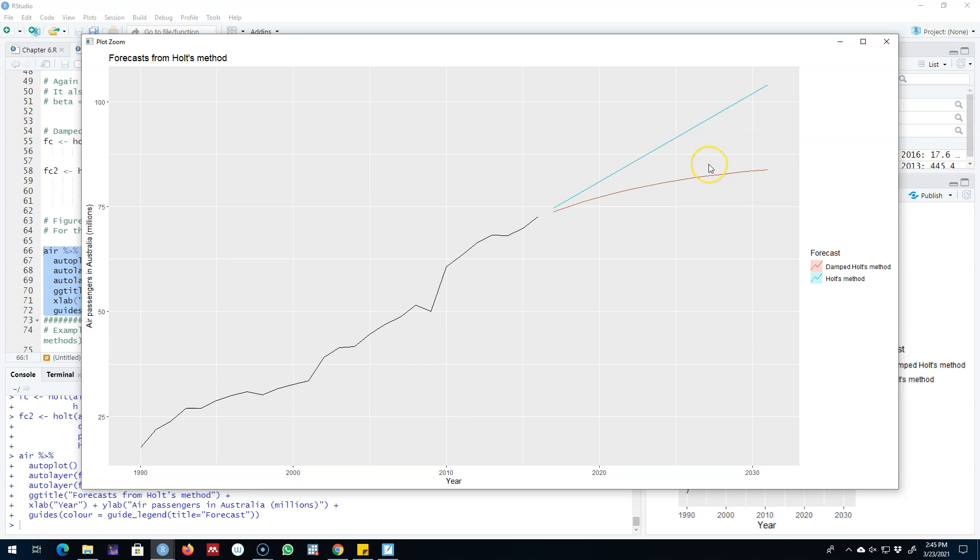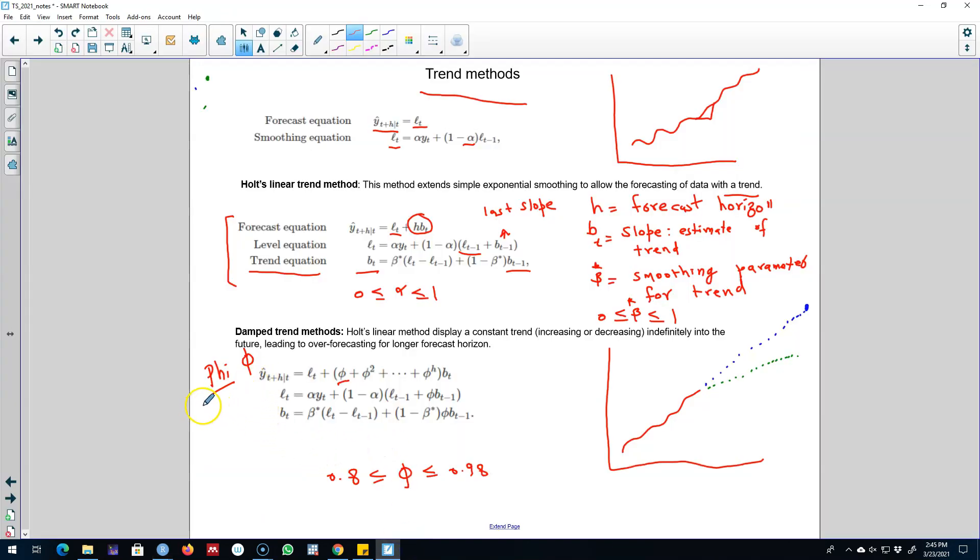So this is also another useful way of forecasting, especially with the time series for longer forecast horizon, as was the case here. We were trying to forecast for the next 15 years, so we probably need to introduce a dampening parameter. And here we introduce the value of phi which determines how much damp we want to introduce in this trend, and we set the value equals 0.9 in this case.